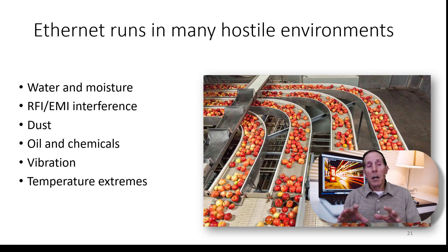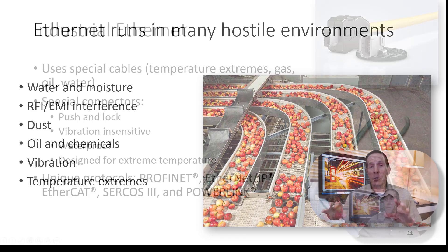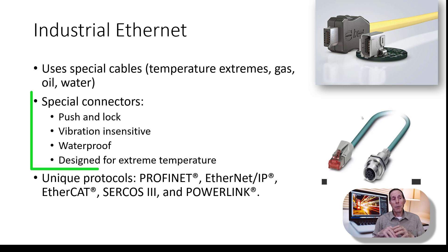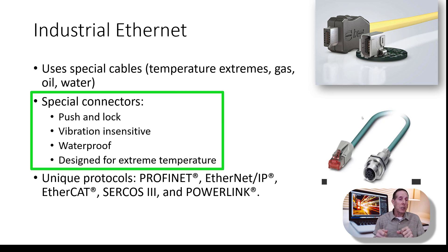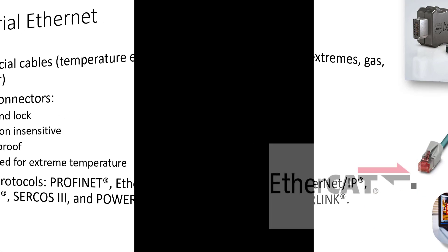Ethernet runs in many hostile environments where you have water, moisture, RFI, EMI, dust, oil, chemicals, vibration, and temperature extremes. Industrial Ethernet uses special cables that can withstand all those extreme conditions, plus special connectors that are push-and-lock, vibration insensitive, waterproof, and designed for extreme temperature. Many industrial Ethernet systems use unique protocols.